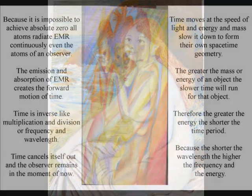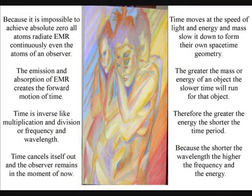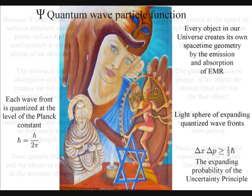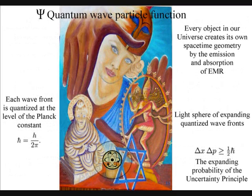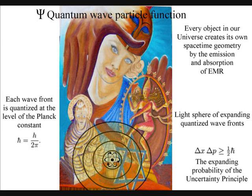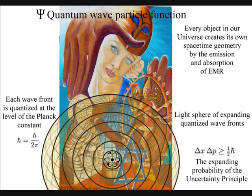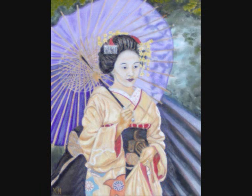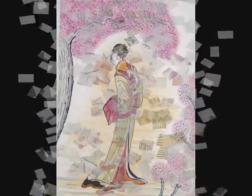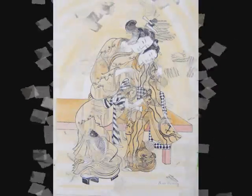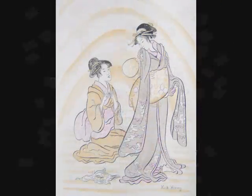To put this very simply, time moves at the speed of light and energy and mass slow it down to form their own spacetime geometry. Therefore the observer will collapse the wavefunction, creating his or her own independent reality of time and space. This is very difficult to visualize, but in this oil painting of a geisha girl walking through sunlight, using the terminology of quantum mechanics, the wave-particle duality of the light will collapse as she walks through the rays of light, creating her own spacetime geometry.